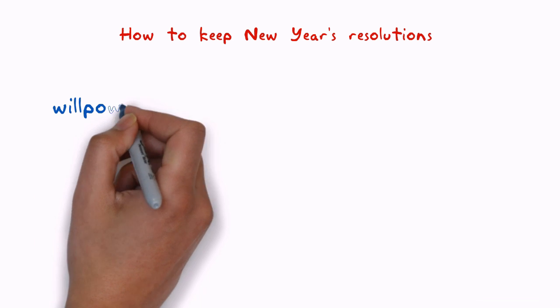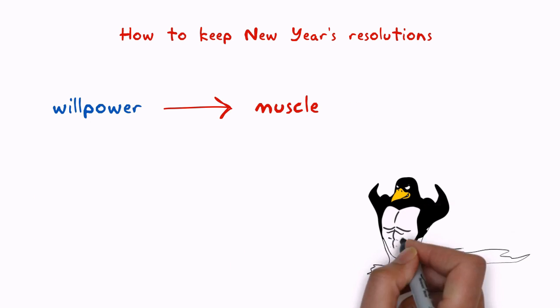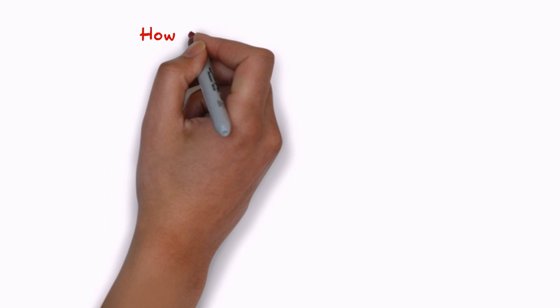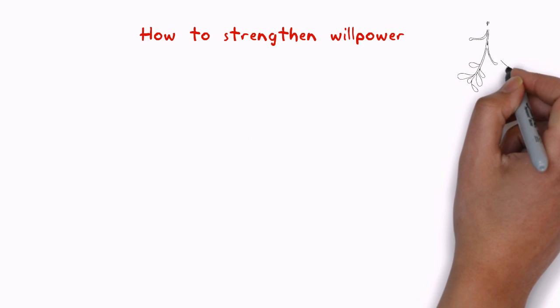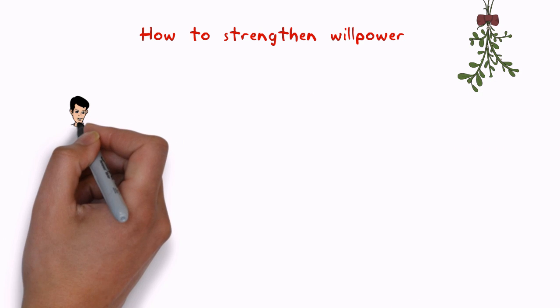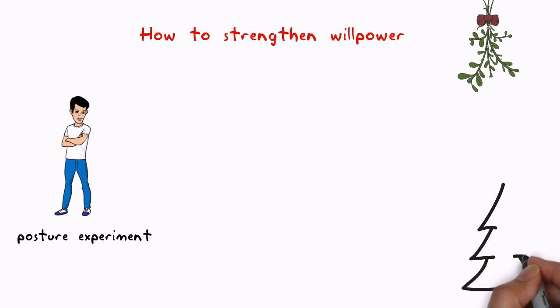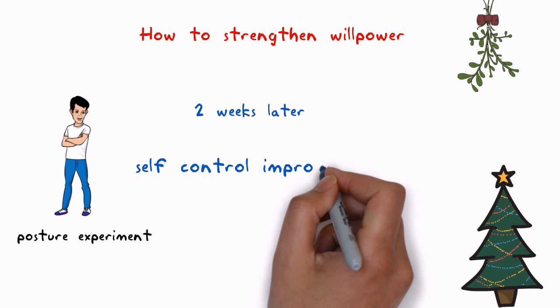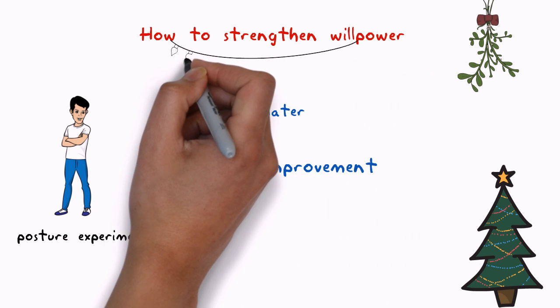Researchers suggest we think of willpower as a muscle that needs to be strengthened. They suggest that it might be possible to strengthen willpower by exercising it. In one experiment, they asked a group of students to improve their posture for two weeks, thereby practicing mental discipline in one area. The students showed a marked improvement on subsequent measures of self-control, at least when compared to a group that didn't work on posture control.